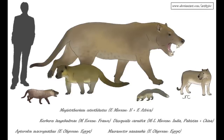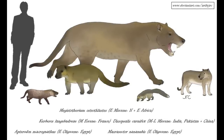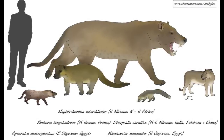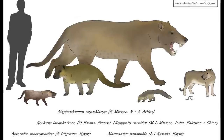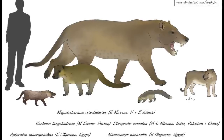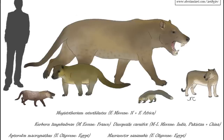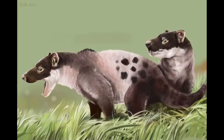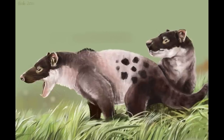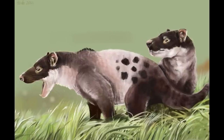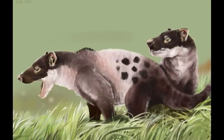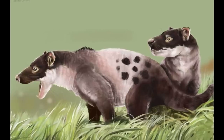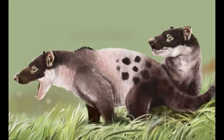Having first appeared in Europe, Hyenodonts quickly spread into Africa by the Paleocene, and would become the dominant carnivores on that continent until the Middle Miocene. The group would also enter Asia and North America by the end of the Paleocene. At this stage in their evolution, these animals were not the dominant predators in their environments, playing second fiddle to larger carnivores such as the Mesonychids and Oxyaenids.